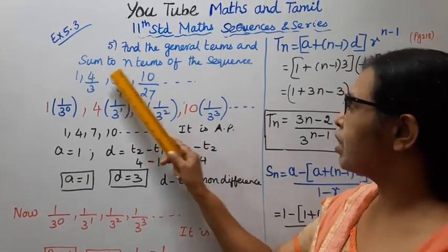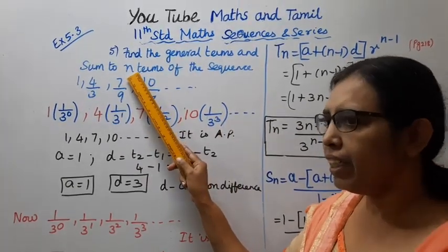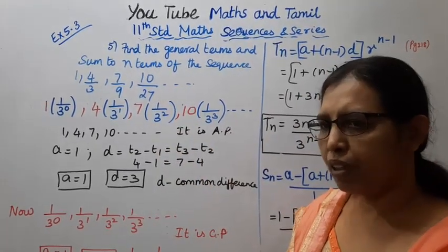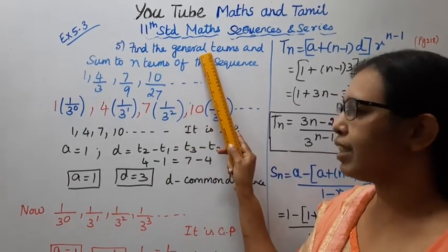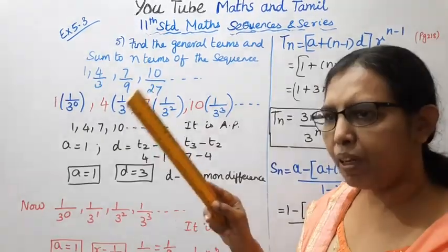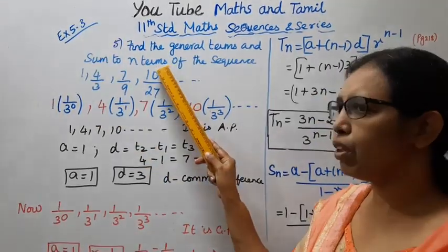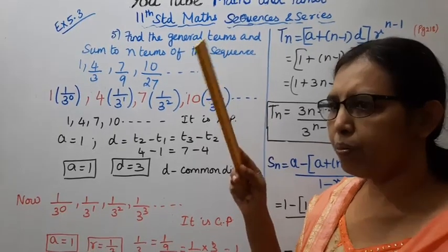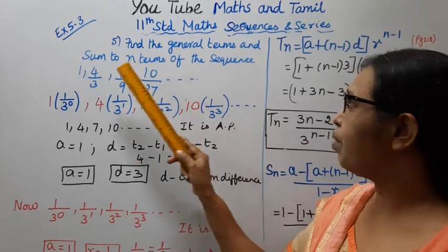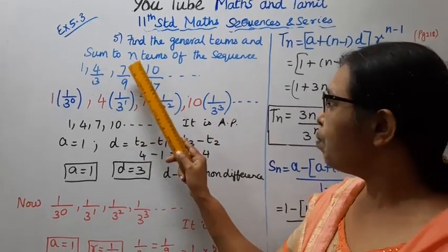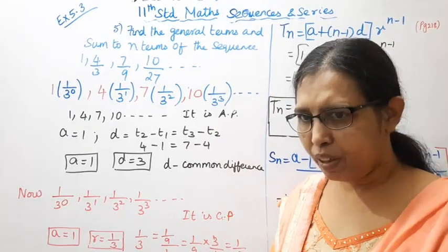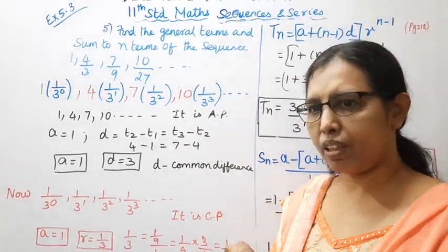We need to find the general term and sum. The numerator forms an arithmetic progression and the denominator forms a geometric progression — so this is an arithmetico-geometric progression. For AP: general term Tn = a + (n−1)d, and sum = n/2 × [2a + (n−1)d].